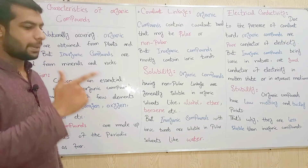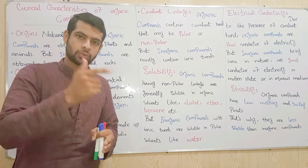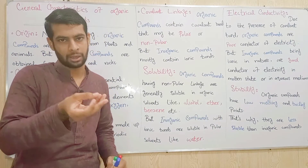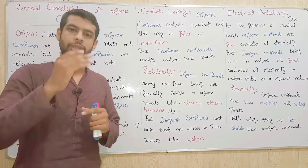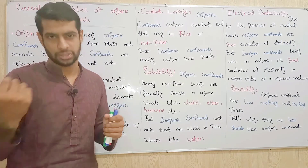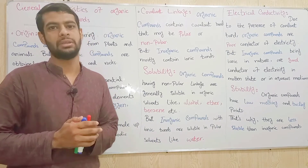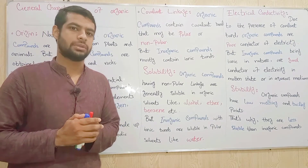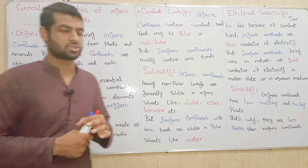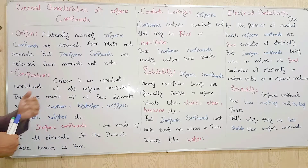سبسے پہلا پوائنٹ ہمارے پاس origin ہے۔ Origin میں یہ ہے کہ جو source ہوتا ہے، means ہمیں کہاں سے organic compounds حاصل ہوتے ہیں، وو ہیں plants and animals۔ لیکن جو inorganic compounds ہیں وہ ہمیں minerals and rocks سے ملتے ہیں — means چٹانیں، اور زمین کے اندر جتنی بھی معدنیات ہیں، وہ inorganic compounds کا source ہیں۔